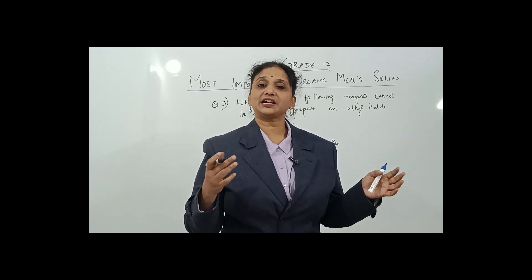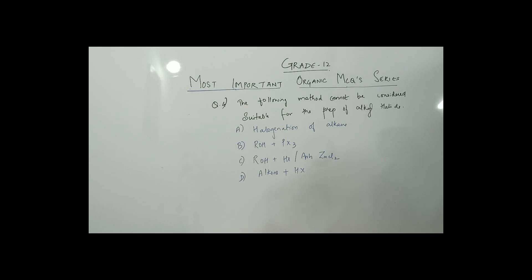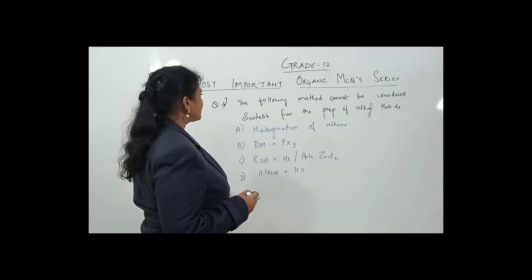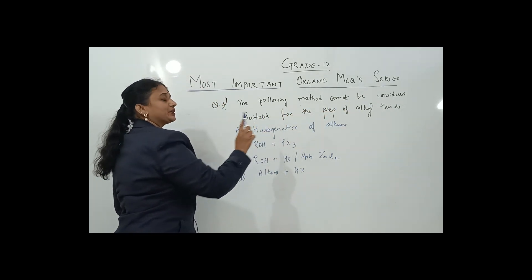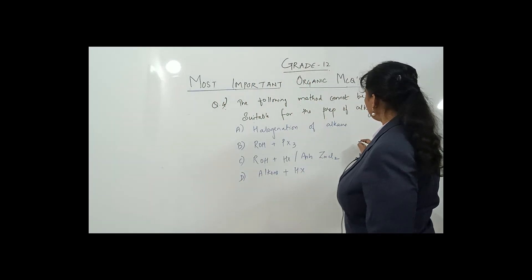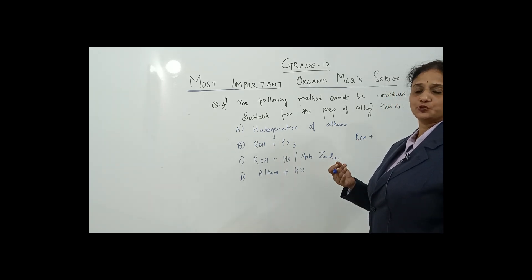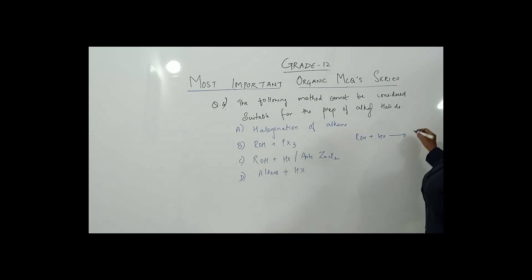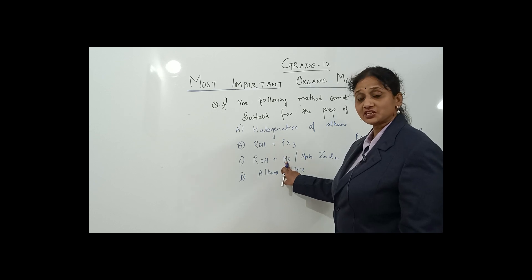The fourth question: which method cannot be considered suitable for the preparation of alkyl halide? The conversion of alcohol in the presence of Lucas reagent, SOCl₂, PCl₃, or PCl₅ is a nucleophilic substitution reaction — you're replacing OH with X in the compound.